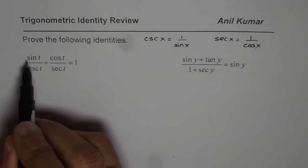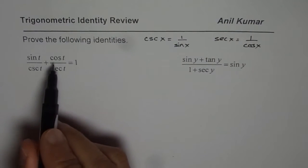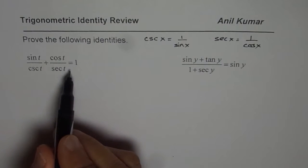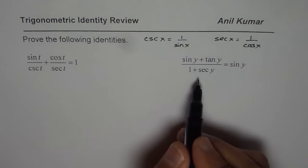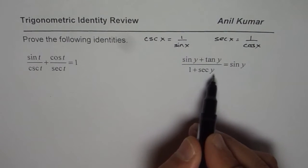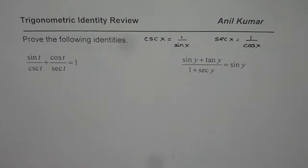The first one is sine t over cosecant t plus cos t over secant t equals 1. The second one is sine y plus tan y divided by 1 plus secant y equals sine y. You can also pause the video, answer, and then look into my suggestion.